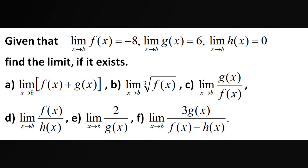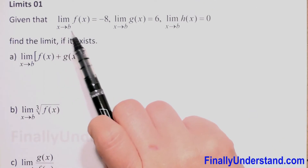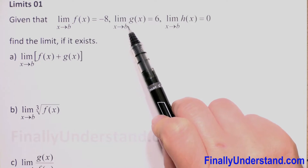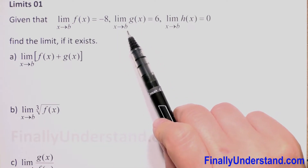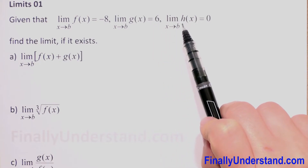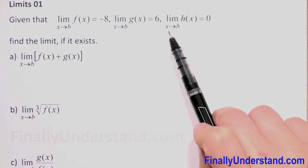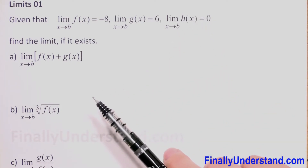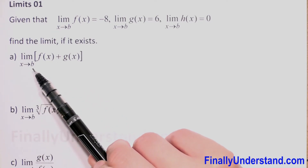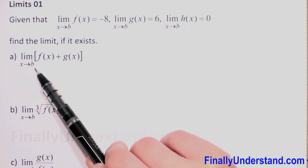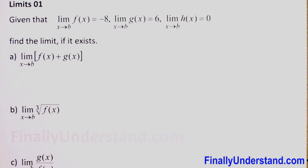We have given that the limit of f(x) as x approaches b equals negative 8, the limit of g(x) as x approaches b equals 6, and the limit of h(x) as x approaches b equals 0. We have to find the limit of f plus g as x approaches b.